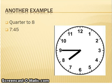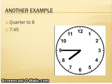Now the digital time. When we want to write the digital time, we start with the hour hand and check which number it already passed. It already passed the seven, so we write seven-forty-five.